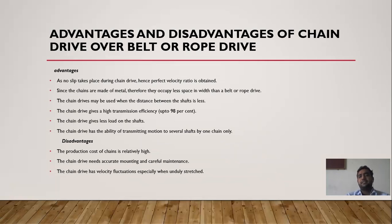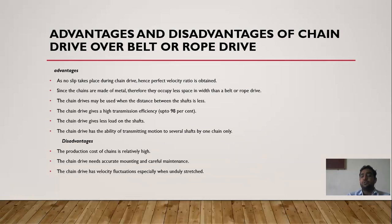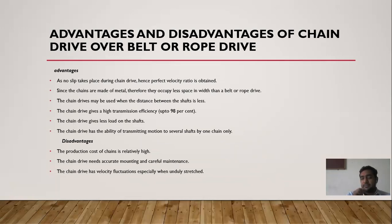Chain drives give high transmission efficiency up to 98%. They give the least load on the shaft. The chain drive has the ability to transmit motion to several shafts using only one chain, whereas belt drive requires multiple arrangements. Only one chain is needed to transmit power from one shaft to multiple shafts.